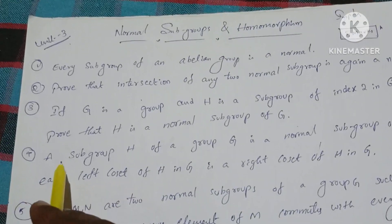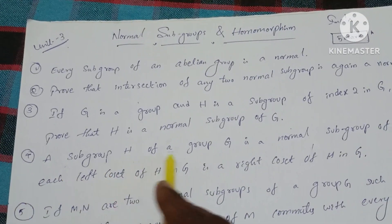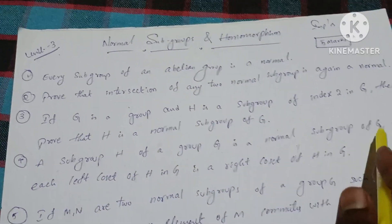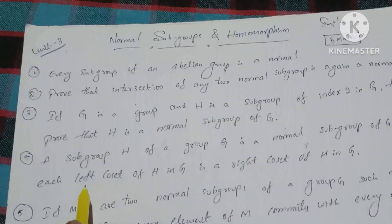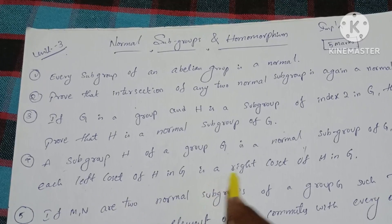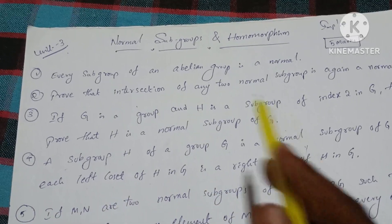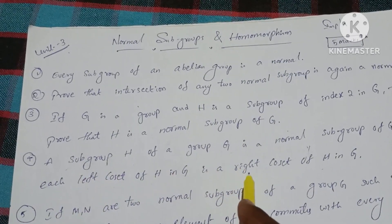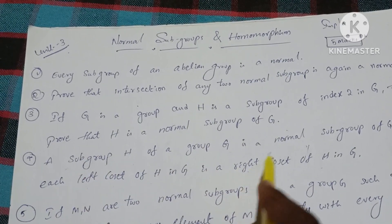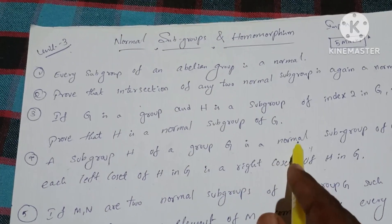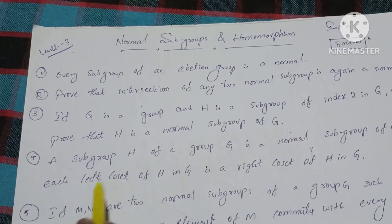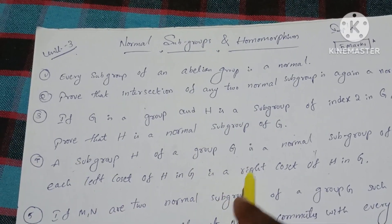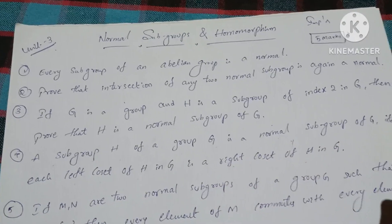Fourth question: A subgroup H of a group G is a normal subgroup if and only if each left coset of H in G is a right coset of H in G — that is, left coset equals right coset. This is an if and only if condition.